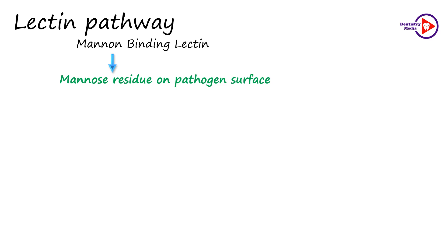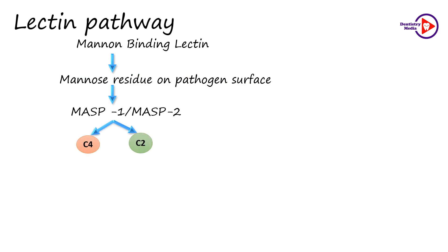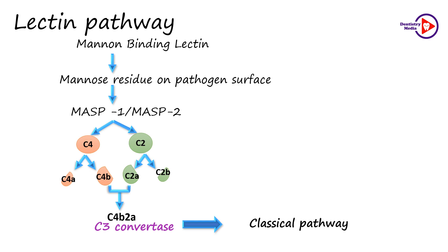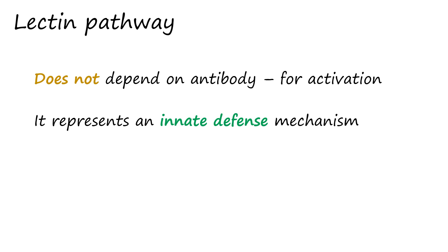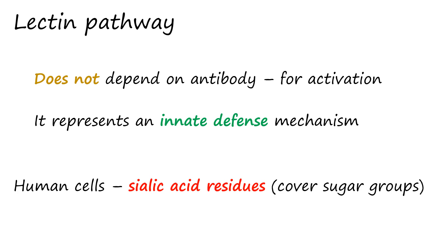After the mannose-binding lectin binds to the pathogen, specific proteases, namely mannose-binding lectin-associated serine proteases 1 and 2 (MASP1 and MASP2), are activated and form an active complex similar to the C1 complex formed in the classical pathway. This active complex causes cleavage and activation of C4 and C2 to form the C3 convertase. The rest of the pathway is similar to that of the classical pathway. The lectin pathway is involved in the first line of defense because it does not depend on antibody for its activation, representing an innate defense mechanism comparable to the alternative pathway. Human cells are spared because they contain sialic acid residues covering the sugar groups and are therefore not recognized by the mannose-binding protein.